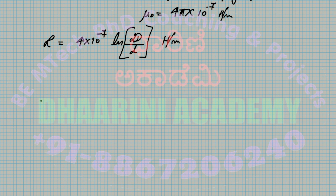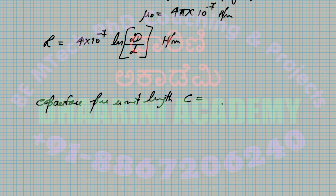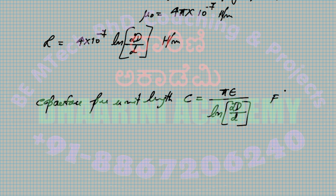Similarly, there is a standard equation for capacitance per unit length: C = πε / ln(2D/d), in Farads per meter. Here ε is the permittivity of the medium.